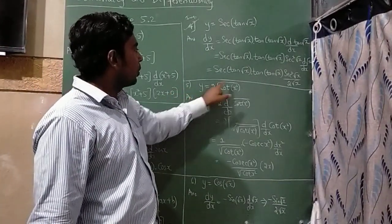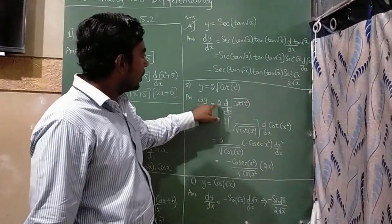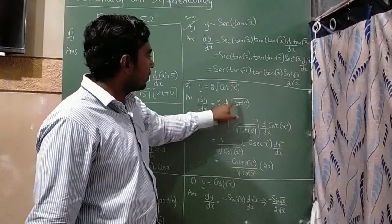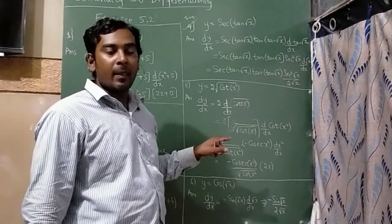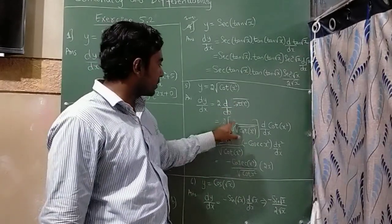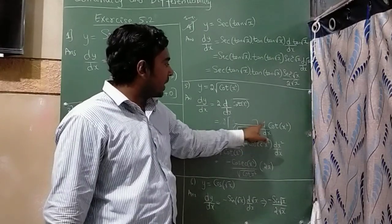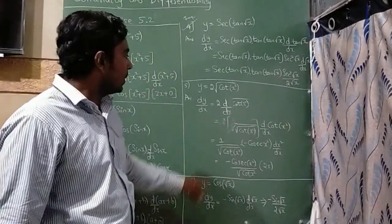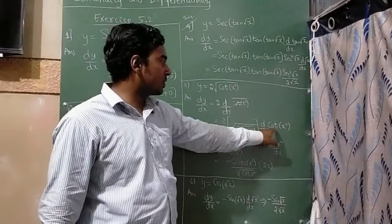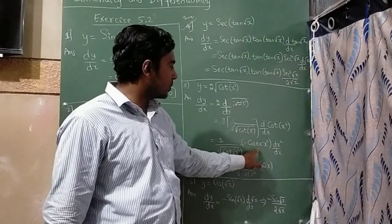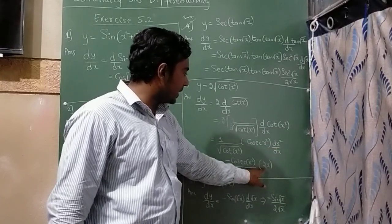Fifth question: y is equal to 2√(cot(x²)). dy/dx is equal to 2 · d/dx of √(cot(x²)). By formula, d/dx of √x is 1/(2√x), so this gives 1/(2√(cot(x²))) times d/dx of cot(x²) by chain rule. The 2s cancel, leaving 1/√(cot(x²)). d/dx of cot(x²) is −cosec²(x²) · d/dx of x², and d/dx of x² is 2x.